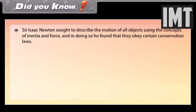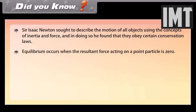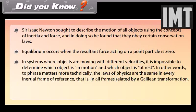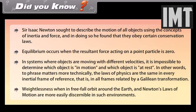Did you know? Sir Isaac Newton sought to describe the motion of all objects using the concepts of inertia and force, and in doing so, he found that they obey certain conservation laws. Equilibrium occurs when the resultant force acting on a point particle is zero. In systems where objects are moving with different velocities, it is impossible to determine which object is in motion and which object is at rest. In other words, to phrase matters more technically, the laws of physics are the same in every inertial frame of reference, that is, in all frames related by a Galilean transformation. Weightlessness when in free fall orbit around the earth and Newton's laws of motion are more easily discernible in such environments.